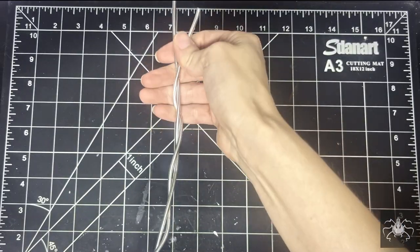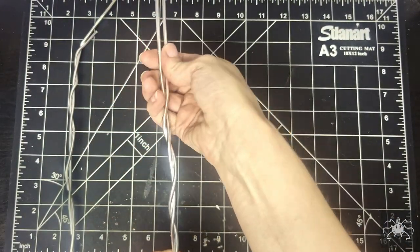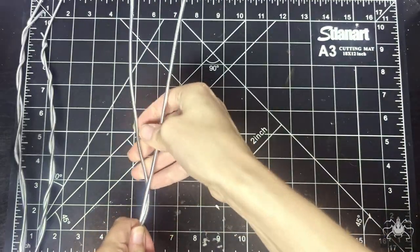To start, I've pre-cut some armature wire, and I'm twisting them together to form the basic outline of the trunk and branches.